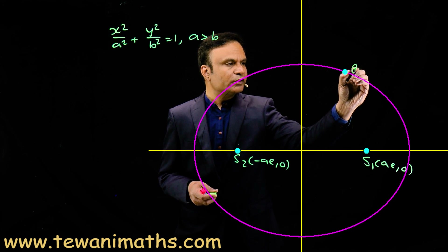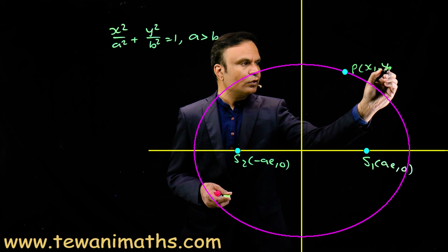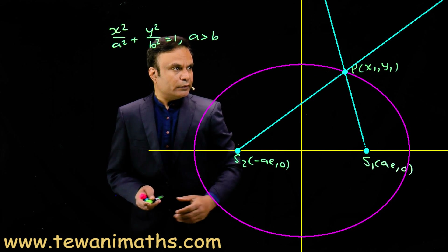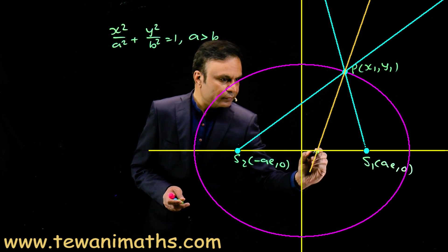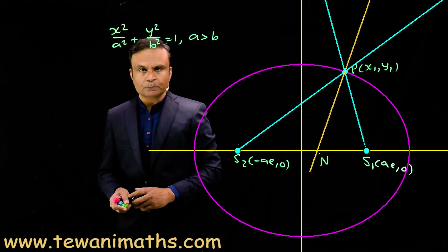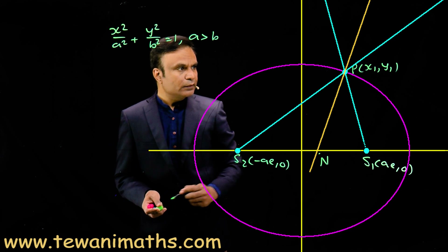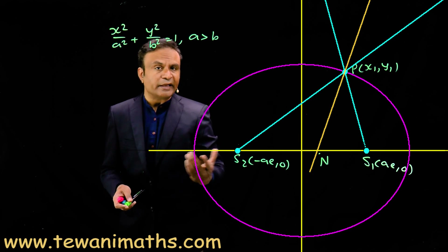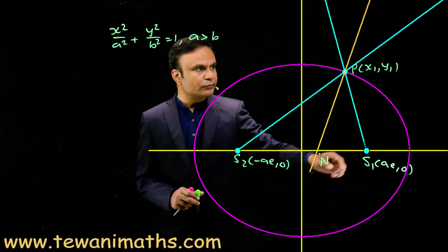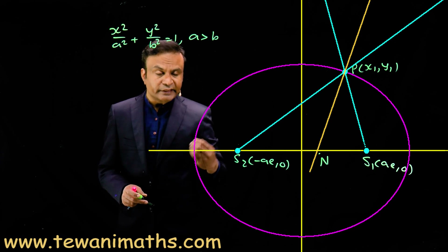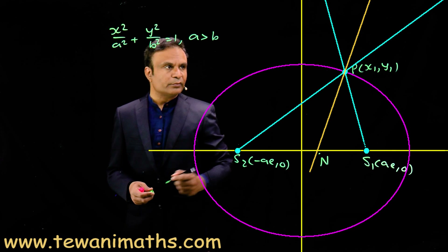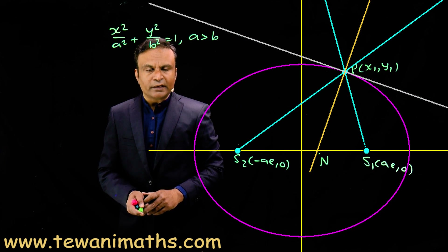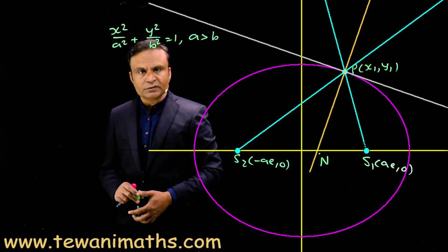Consider point P on the ellipse having coordinates (x1, y1). Join S1P and S2P, and draw the normal at point P meeting the x-axis at point N. The property is that this normal bisects angle S1PS2 — that is, the normal is one of the angle bisectors of lines S1P and S2P. Since the tangent is perpendicular to the normal, the tangent line will be the other angle bisector, because angle bisectors are always perpendicular to each other.